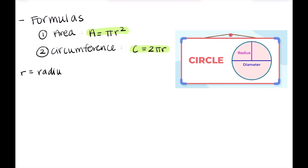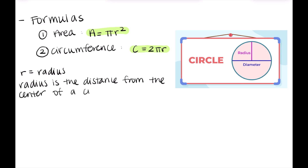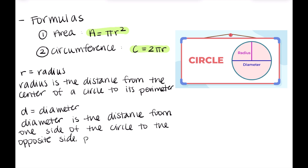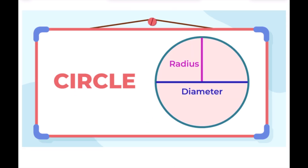So on our right here, we have this diagram of a circle, and we see two vocab words labeled here: radius and diameter. Radius is R, and that's in both of our equations for area and circumference. The radius is just the distance from the center of a circle to its perimeter — so from the center to any edge, that distance would be our radius. Now for diameter, that is represented by D. The diameter is the distance from one side of the circle to the opposite side, and the key point is that it needs to pass through the center.